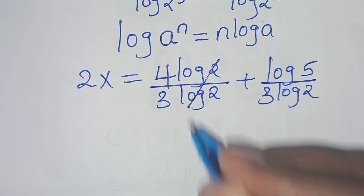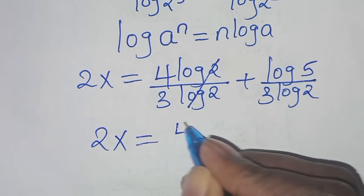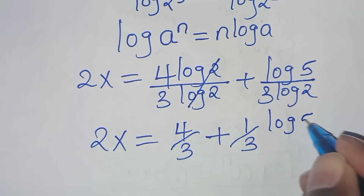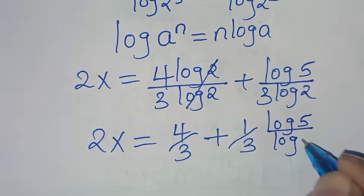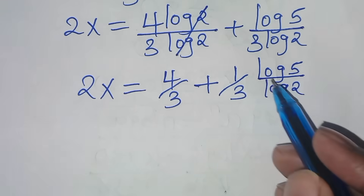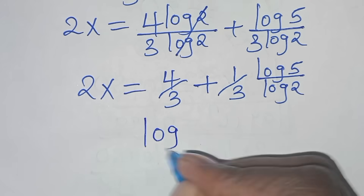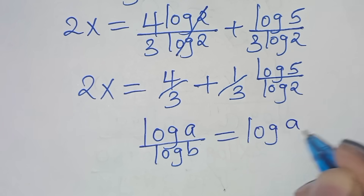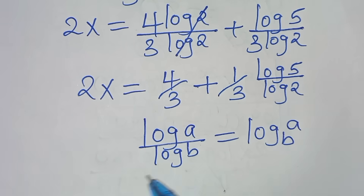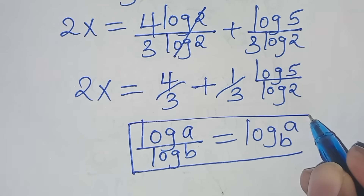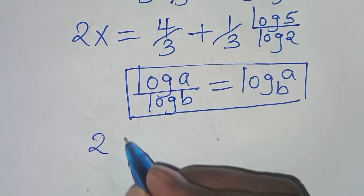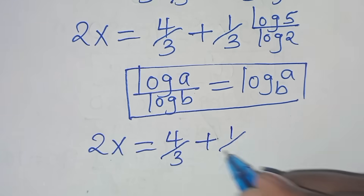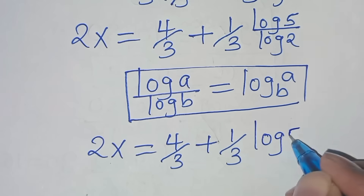Simplifying log(2) terms, we have 2x is equal to 4 over 3 plus 1 over 3 times log(5) divided by log(2). Now, log(5) over log(2) is in the form of log(a) over log(b), which we can express as log base 2 of 5. Applying this logarithm property, 2x is equal to 4 over 3, then plus 1 over 3 times log₂(5).